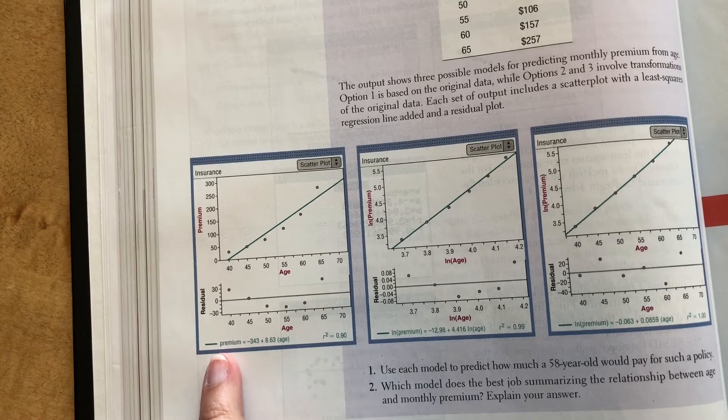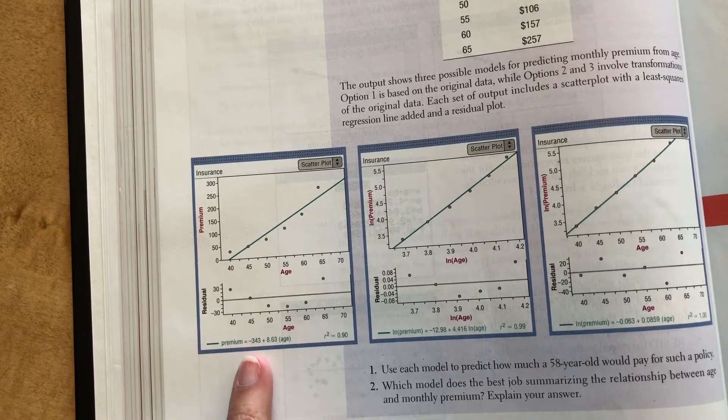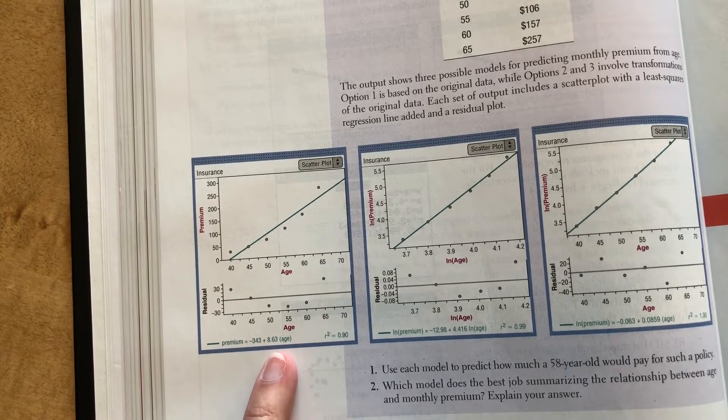And here's our least squared regression line. Predicted premium is based on age.